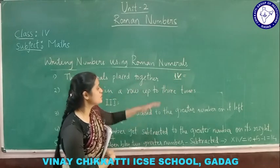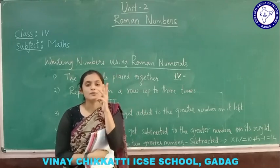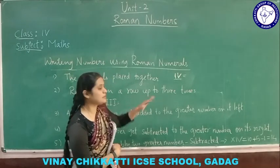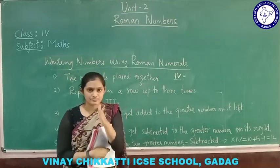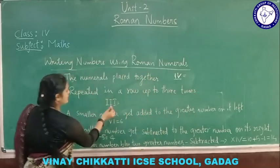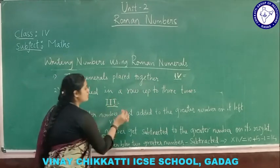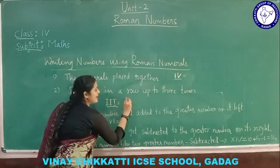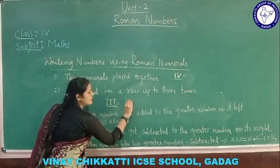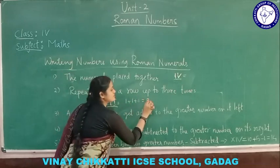A single Roman number can be repeated in a row up to 3 times — not more than 3 times. For example, I, I, I repeated in a single row gets added: 1 plus 1 plus 1 gives the result 3.